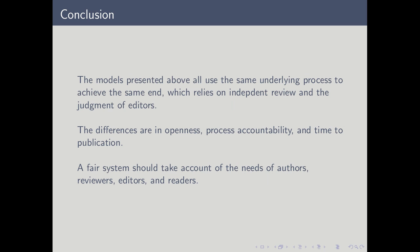To conclude, in terms of the underlying process — inviting reviewers, making a decision, and editorial approval — all of the models I've presented are pretty much identical. The differences, really allowed by the digital age, are in terms of the openness of the process: who knows what, and whether you publish review comments with the paper. Also, authors are really concerned about getting their work out rapidly. Now that publication and shipping time is not such an issue, authors are asking how we can do this quicker. A fair system of review needs to consider the needs of the authors, the needs of the reviewers — we can't hurry reviewers if we're looking for fast publication — the needs of the editors, and also the needs of the readers.